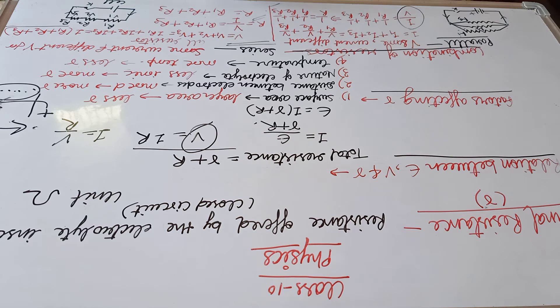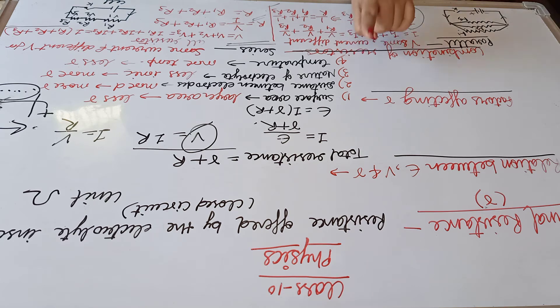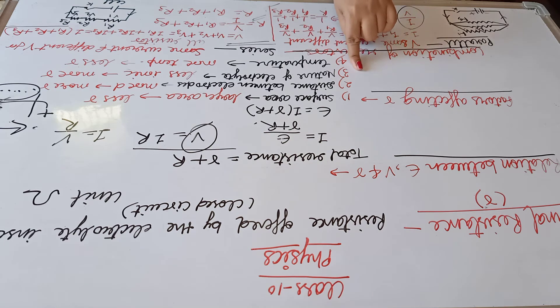Now the factors affecting internal resistance. There are four factors: first is surface area, second is the distance between the electrodes, third is the nature of the electrolyte, and fourth is temperature.